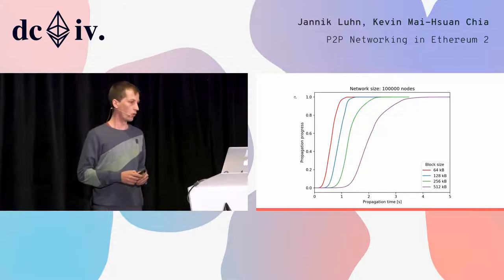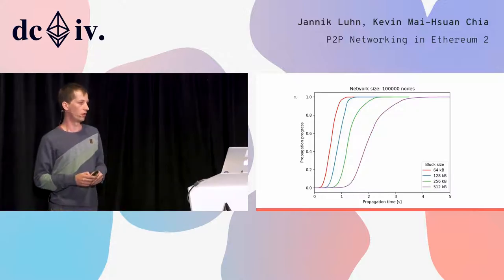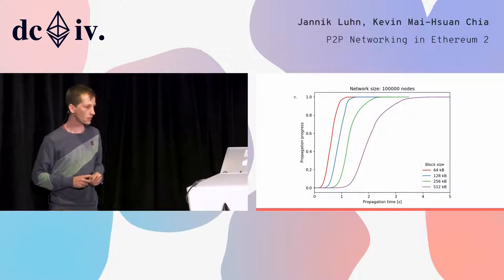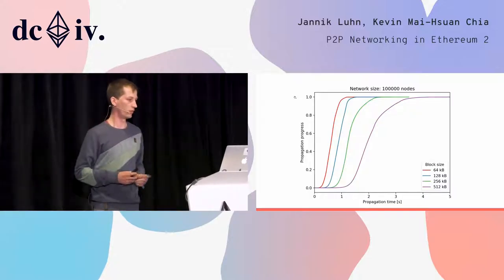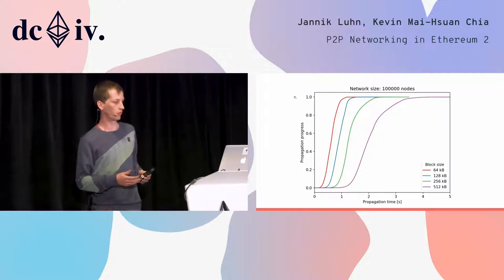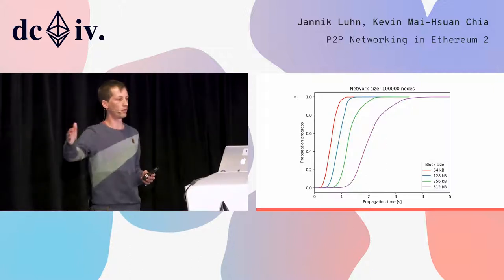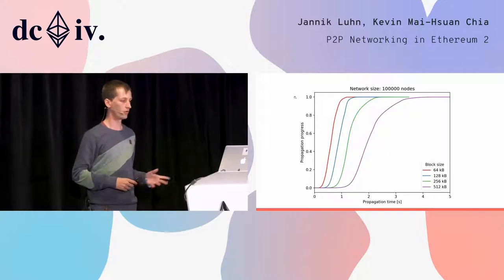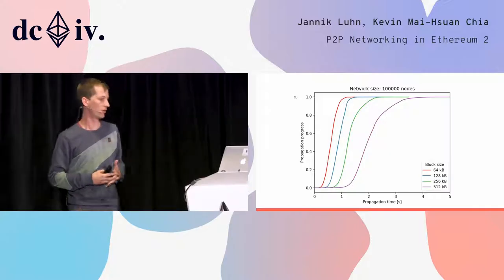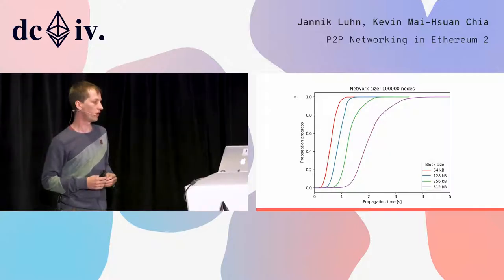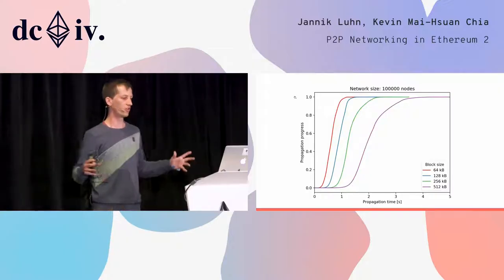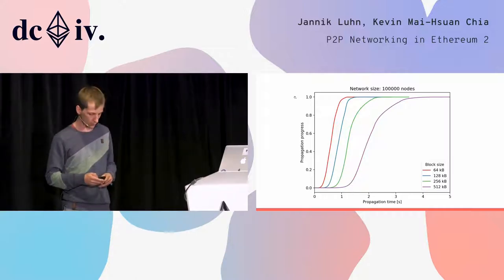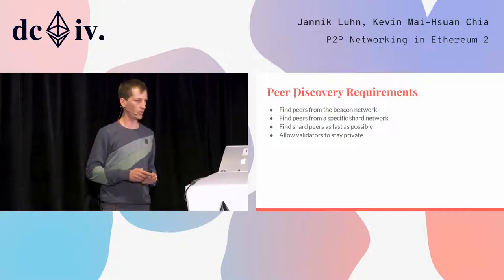We also looked at the beacon network, where I simulated 100,000 nodes. Block sizes are smaller here — 64 kilobytes to 512 kilobytes. Even though the network is much larger, we still get propagation times of a couple of seconds. So this seems to work very well and we are happy with that.